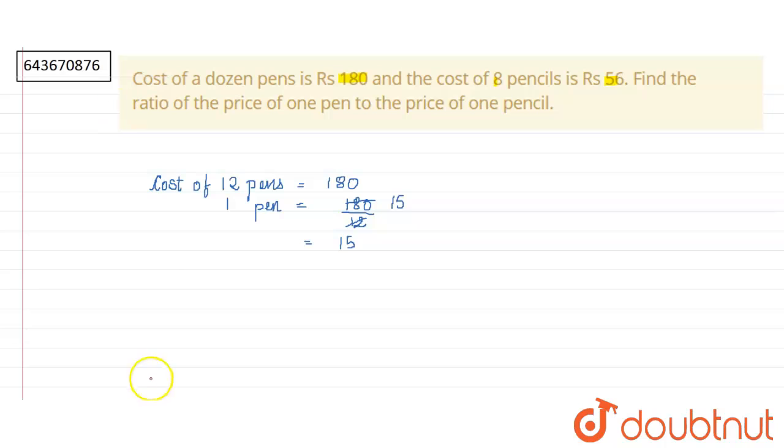Now let's move to the pencil. Cost of 8 pencils given to us is 56. Cost of 1 pencil will be equal to 56 divided by 8. This is 8 into 7 is 56. So the cost of 1 pencil is Rs. 7.